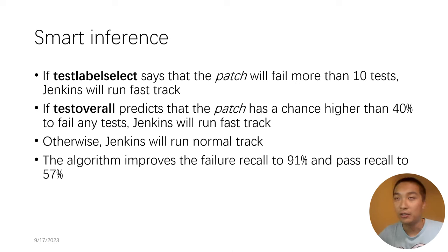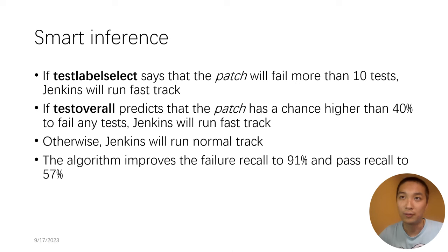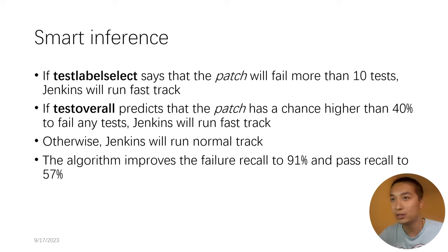As a result, a smart inference algorithm is proposed to capture more failed unit tests. In this algorithm, we first run Test Label Select for all tests. If it predicts that the patch will fail more than 10 tests, Jenkins will run the fast track. If not, we feed the Test Label Select output into the Test Overall model, together with the original patch features, to predict the patch's probability of failing any unit tests. If it is higher than 40%, it is considered high-risk and the fast track will be run; otherwise the patch is considered low-risk and runs the normal track. This algorithm improves the failure recall to 90%, while keeping the pass recall at 57%.